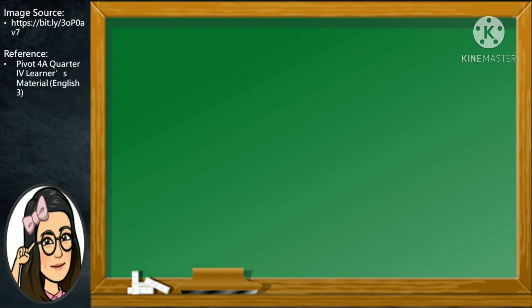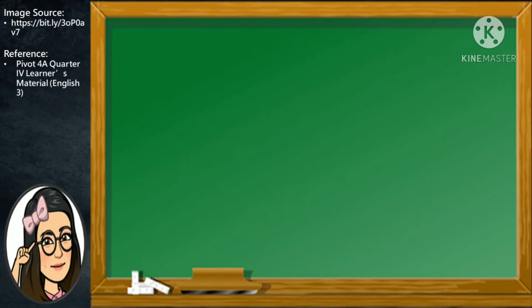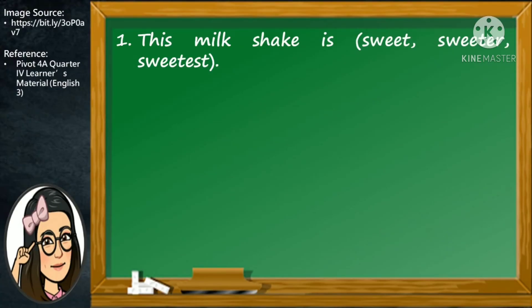Did you understand our lesson for today? Let me check if you do. For your second activity, I want you to choose the correct form of adjective for each sentence and write your answers in your English notebook. Number one: This milkshake is blank. Is it sweet, sweeter, or sweetest? Excellent! The correct answer is sweet. This milkshake is sweet.